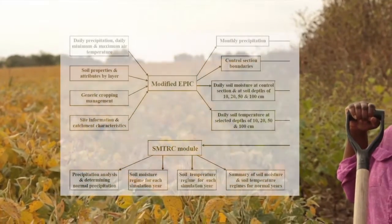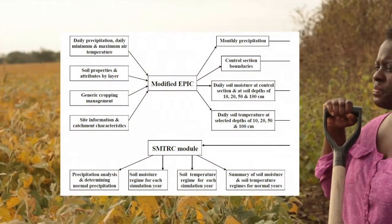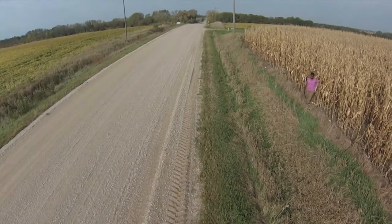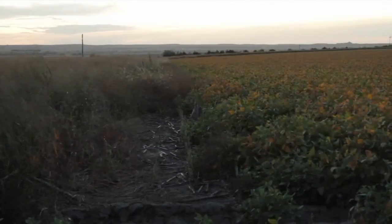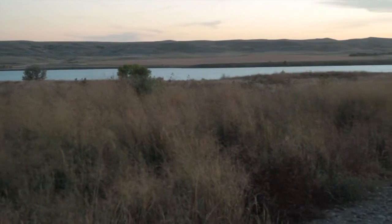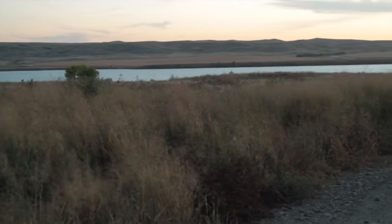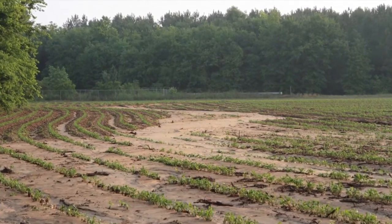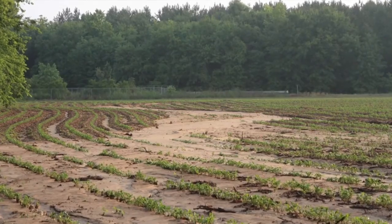I'm interested in the processes that happen at the field scale. The tools that I use are edge-of-field and landscape models. Edge of field represents the area that connects the upland fields to a water body or water source. My interest in edge of field is because how we manage the land impacts what leaves the land that we're managing.